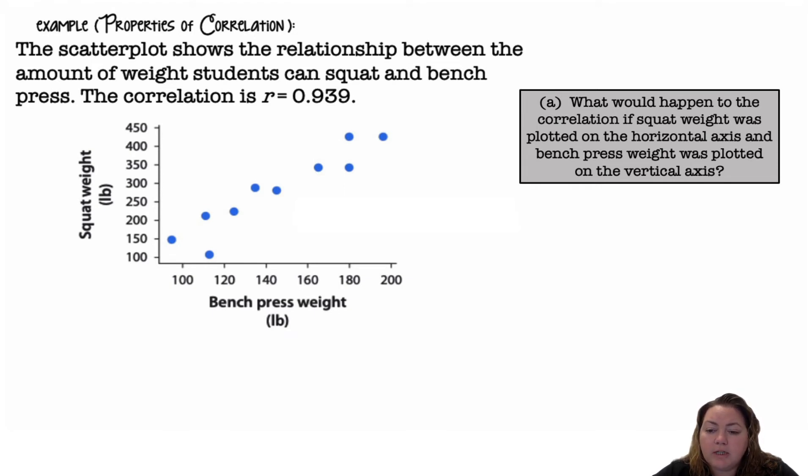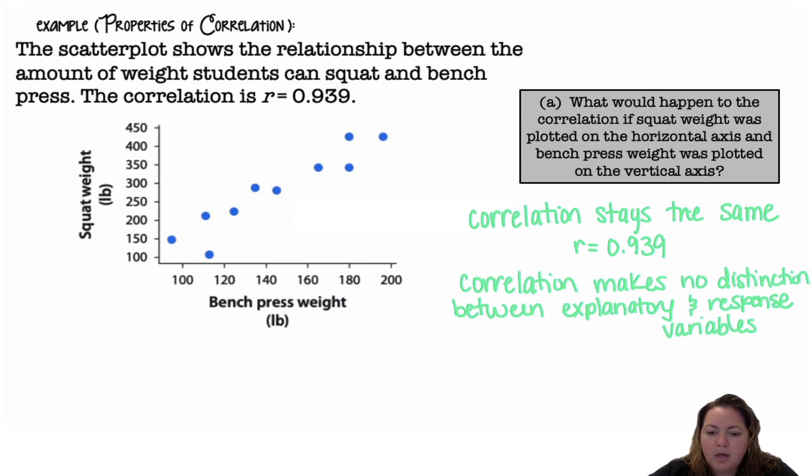What would happen to the correlation if squat weight was plotted on the horizontal axis and bench press weight was plotted on the vertical axis? So if I flip-flopped what's on the x and the y, what would happen? The correlation would stay the same, 0.939. That's the relationship between those two things, so it's just as strong of a relationship. Correlation makes no distinction between the explanatory and the response variable. It's just measuring the relationship between those two variables.